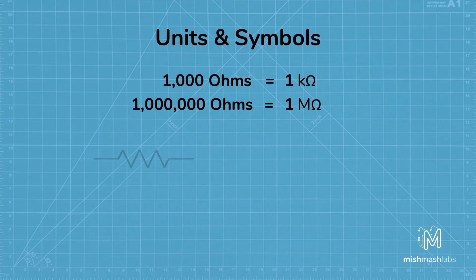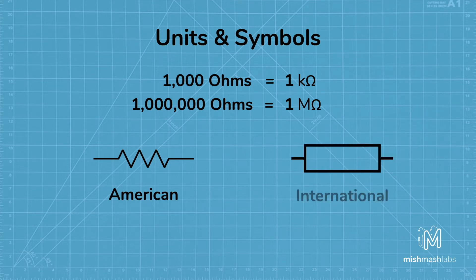All resistors have two terminals. Our resistor will be shown as one of two symbols. On the left we have the American symbol and on the right we have the international symbol.